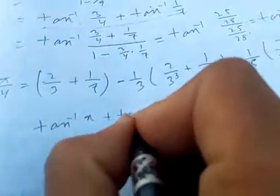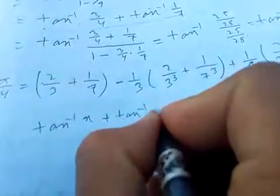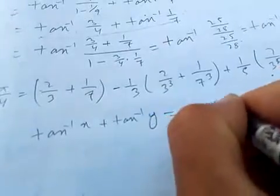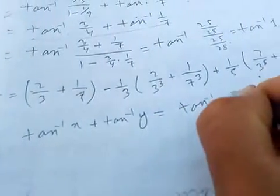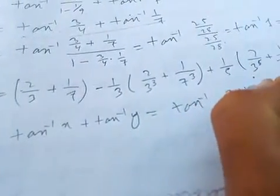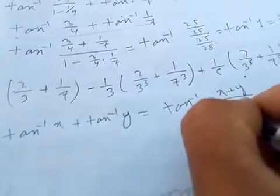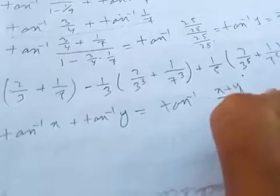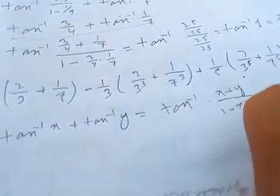The formula used is: arctan(x) + arctan(y) = arctan((x + y) / (1 − xy)).